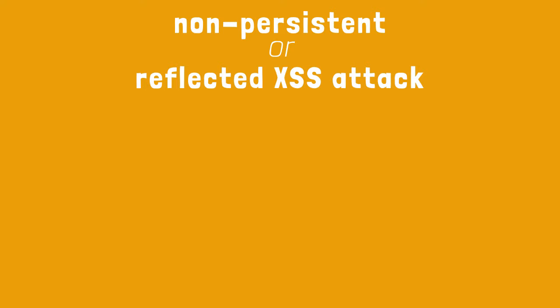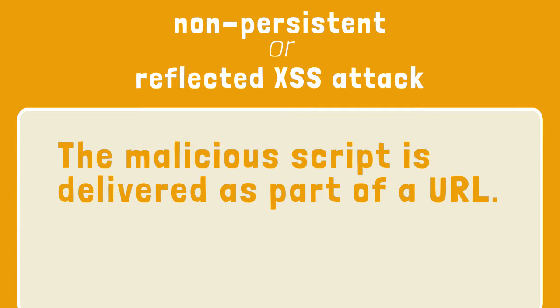A non-persistent attack is also called a reflected XSS attack. In this type of attack, the malicious script is delivered as part of a URL — usually as part of what seems to be a genuine link in an email. This reflective type of attack is the most common attack today. The link might appear to be a genuine domain, and chances are it is, but it also has a complex URL that contains parameters. This makes it a great place to hide a call to inject script.